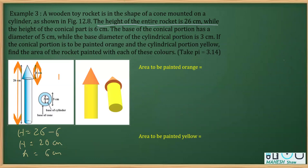We can also write capital R as the radius of the conical portion. From the figure, the diameter is 5, so the radius is 5 over 2, which is 2.5. For the cylindrical portion, the diameter is 3, so the radius is 3 over 2, which is 1.5.